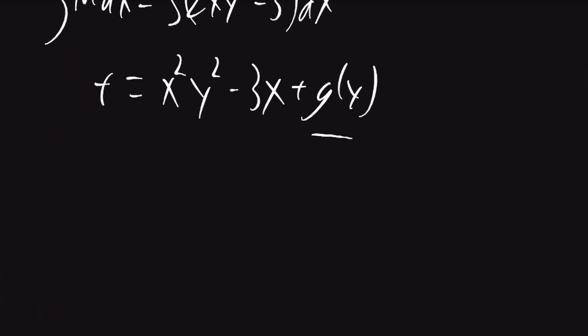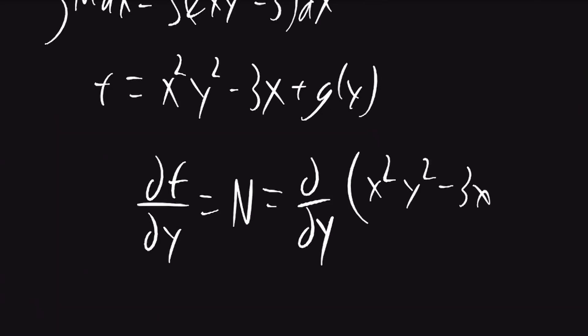To find g of y, we can take the partial derivative of f with respect to y. This is definitionally equal to n. So we can now find the partial derivative of x squared y squared minus 3x plus g of y with respect to y.